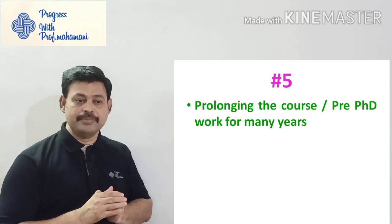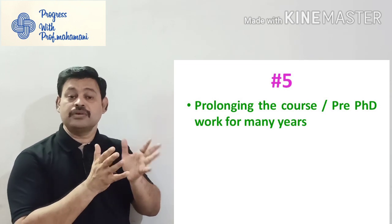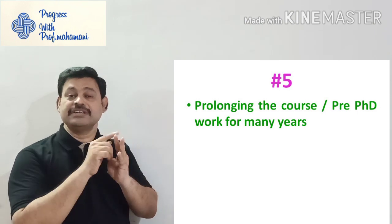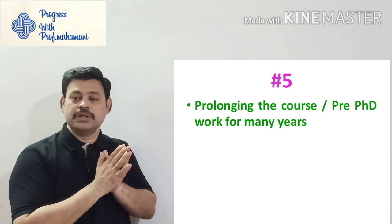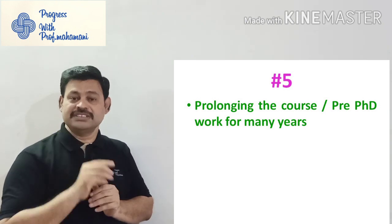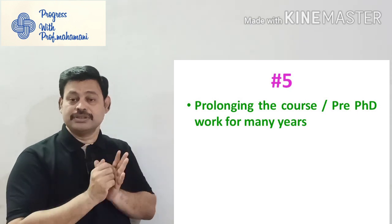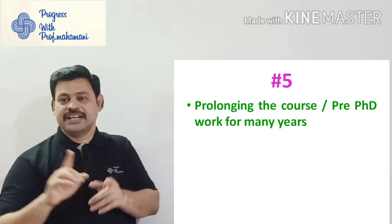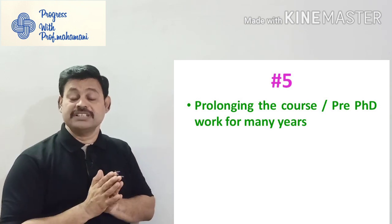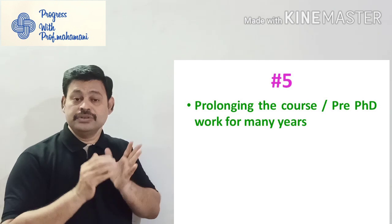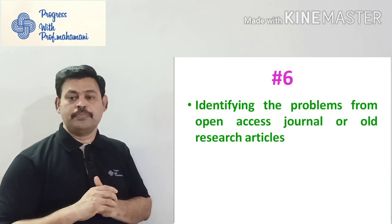The fifth mistake is prolonging the coursework for many years. The PhD course duration is four years, but some people prolong their coursework — taking two subjects in year one and two subjects in year two, which delays the research work. The right practice is to clear all four pre-PhD coursework courses within the first year, so that from the second year onwards you can put more attention on research, do good publications, and achieve on-time thesis submission.